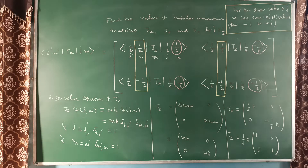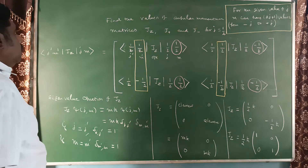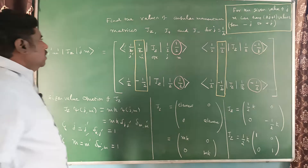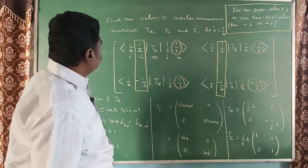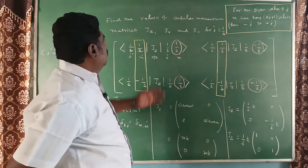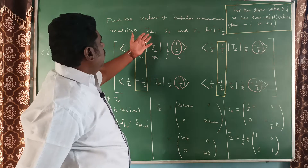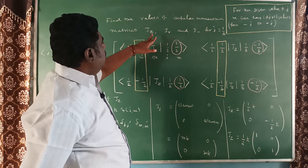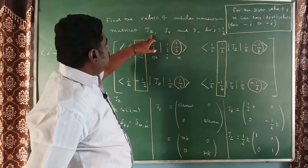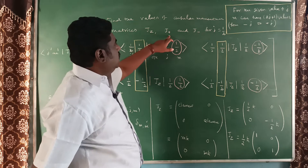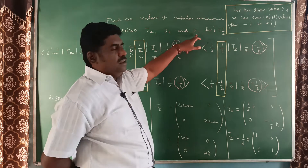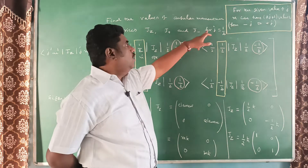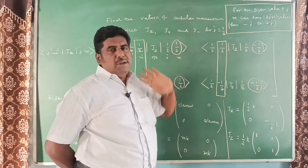Here is a problem. In this problem, we are asked to evaluate the matrices J_z, J+, and J- for J equal to 1/2.